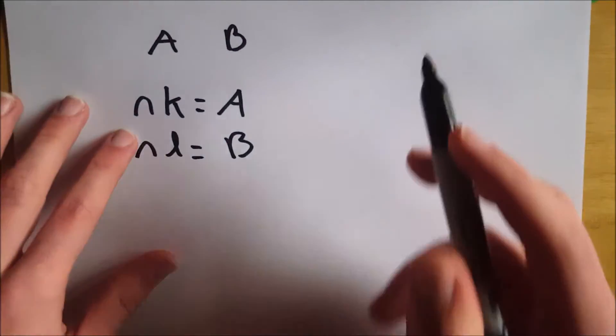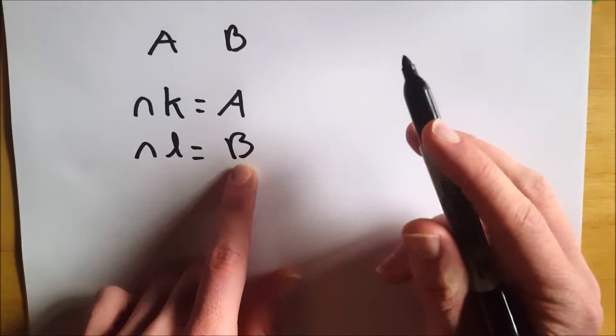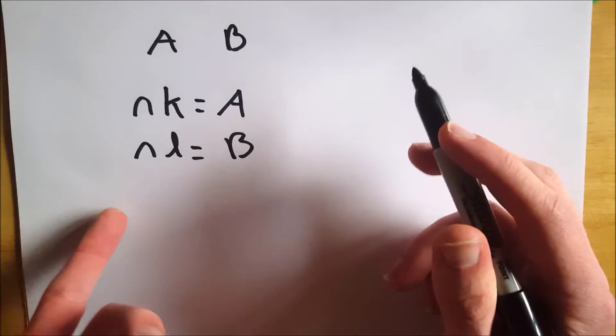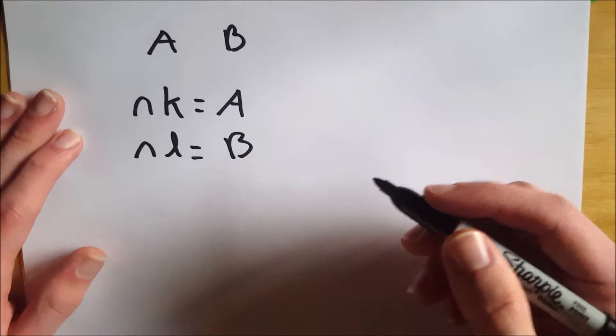So that means we're looking for a number that goes evenly into a and goes evenly into b. The largest number that does that is what you're looking for when you're trying to find the greatest common factor.